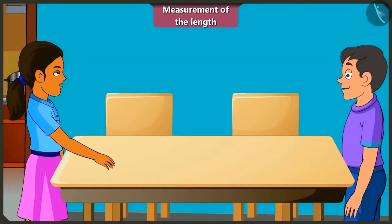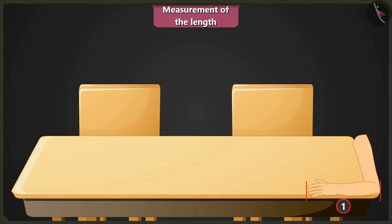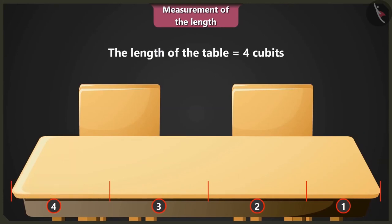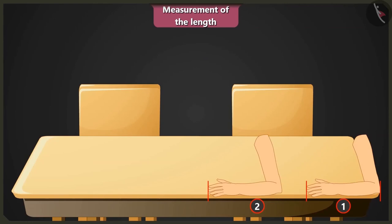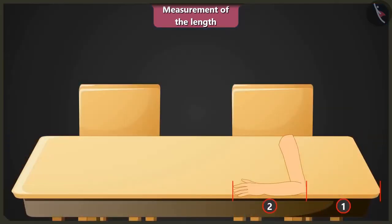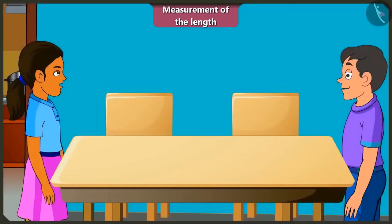Now measure this using your arm length as a unit. The length of this table is 1, 2, 3 and 4 — the length is 4 cubit lengths of my arm. No, Gotu! While measuring the length of the table, you have left some space between the two arm lengths. In this way, you can never get the measurement correct. Now I have understood. I will measure it again: 1, 2, 3, 4 and 5. The length of this table is 5 arm lengths. Now the answer is correct. Thank you, Mintu.